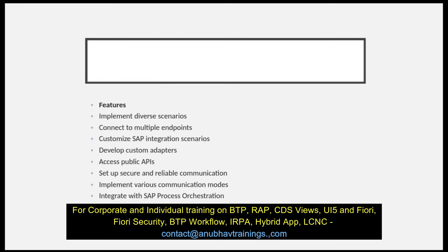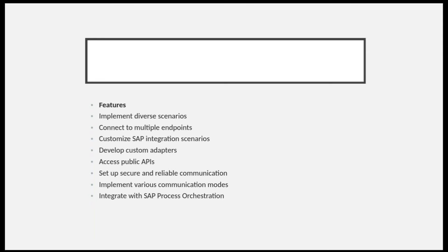The first feature of SAP Cloud Integration is implementing diverse scenarios — it integrates processes and data in application-to-application (A2A) and business-to-business (B2B) scenarios. It also connects to multiple endpoints, integrating various applications and data sources from SAP and non-SAP, on-premise as well as cloud.